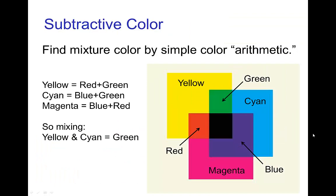The rules for combining these inks are known as subtractive color arithmetic. In the simple case with printing inks: yellow reflects red and green, cyan reflects blue and green, so when you mix them, the color they have in common that they both reflect is green. You can apply this to any other color combinations to see the results shown in the picture.